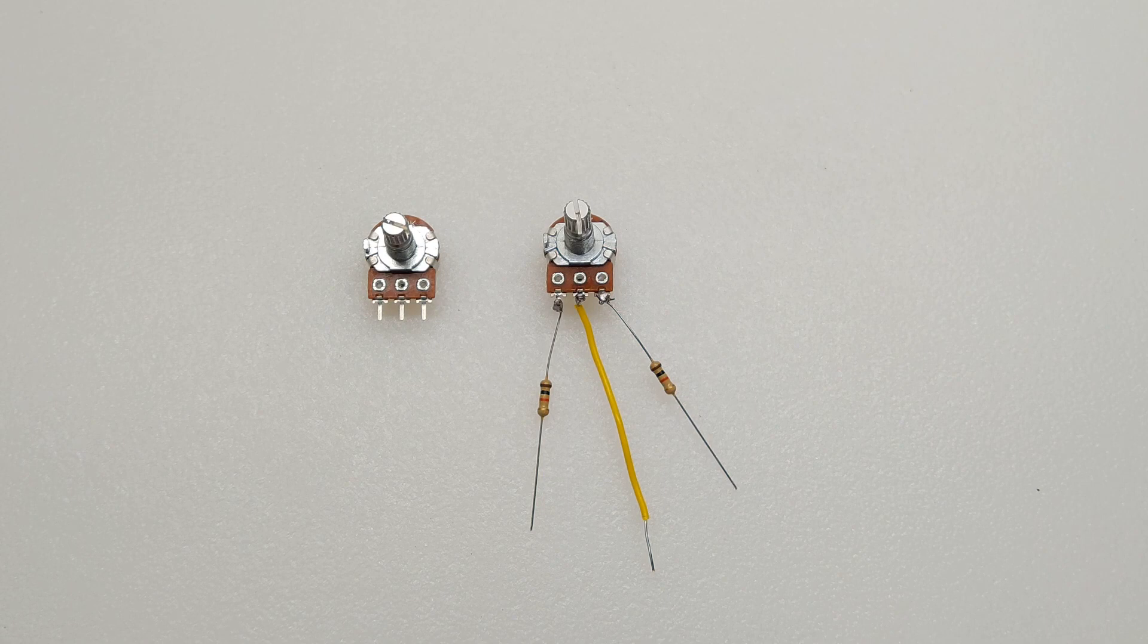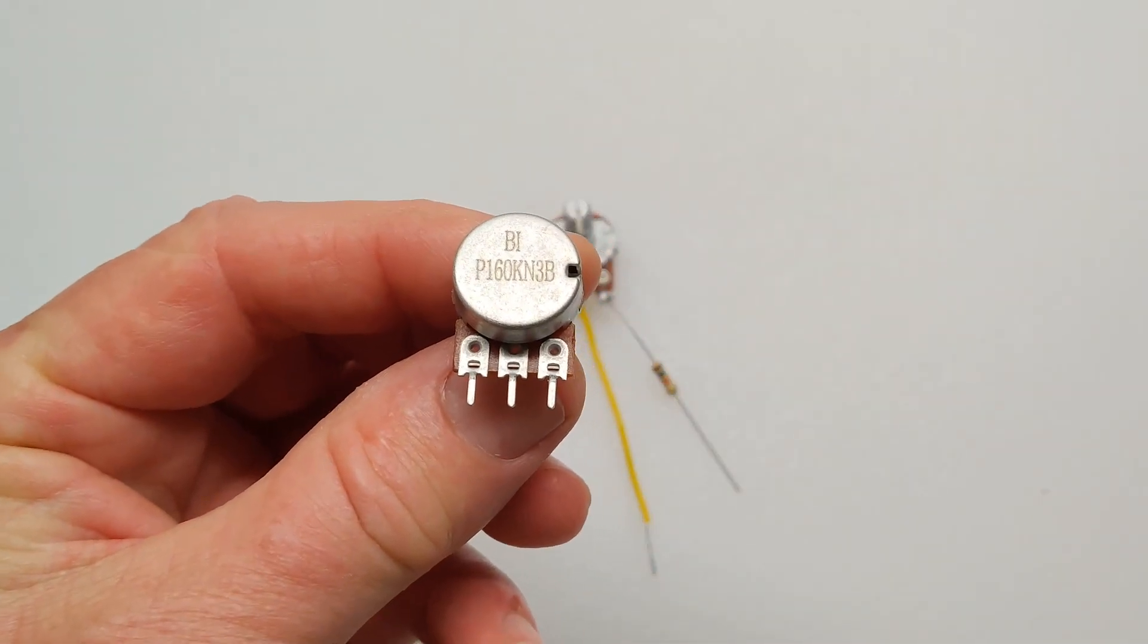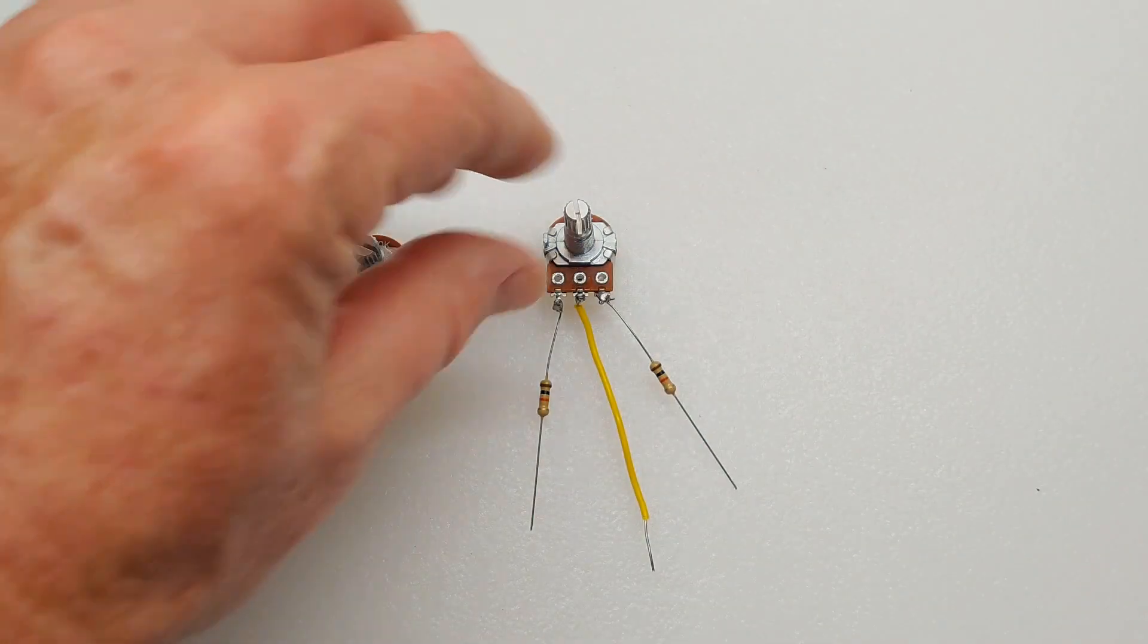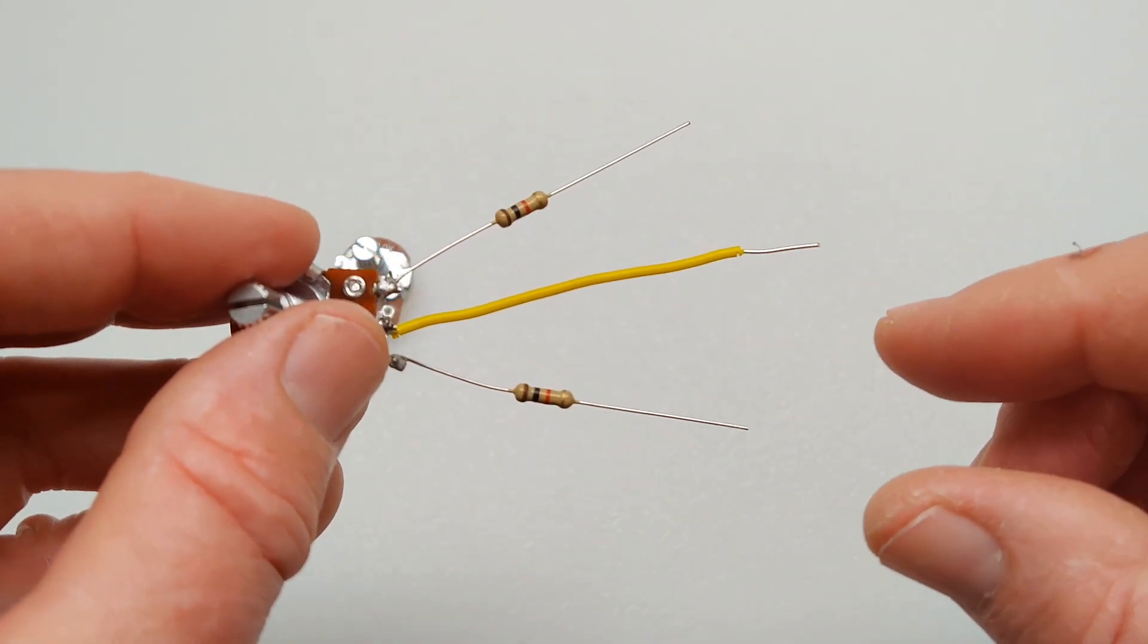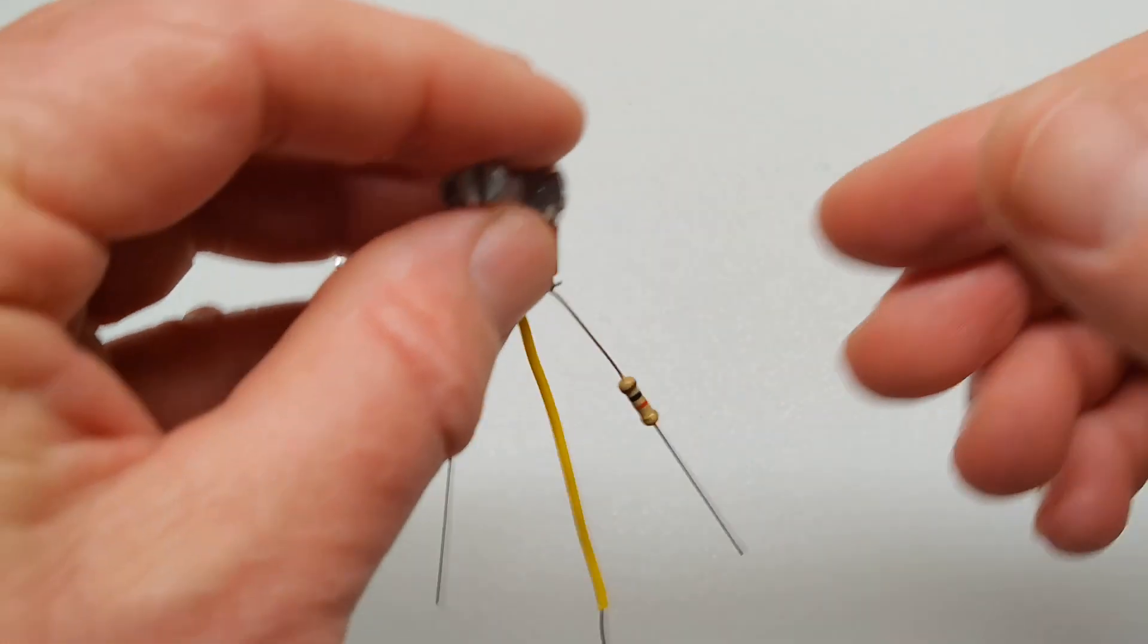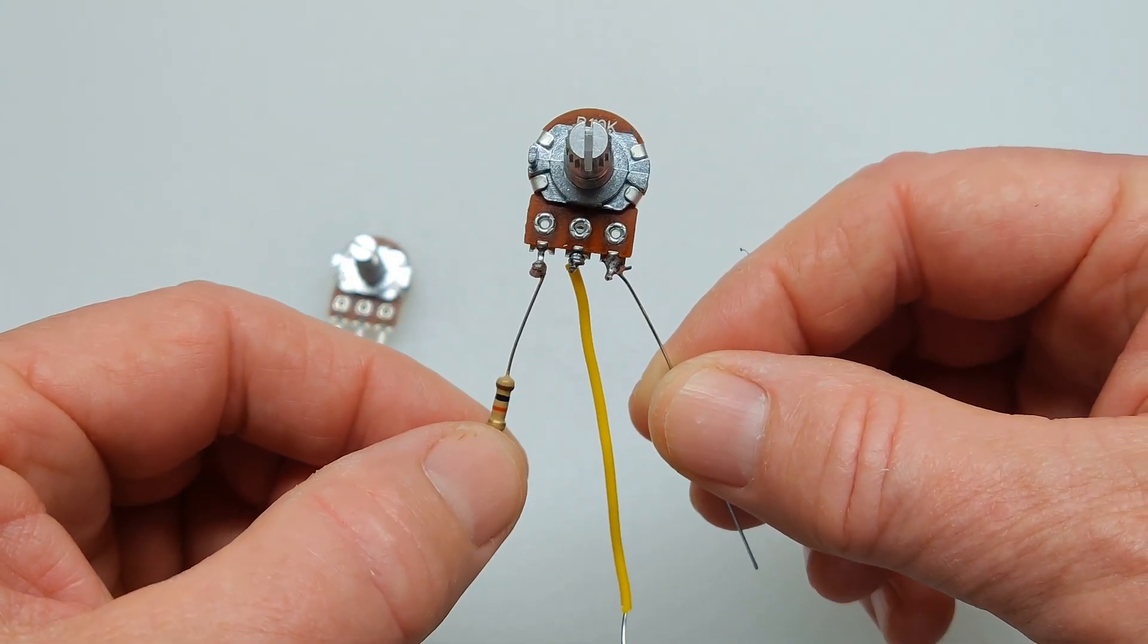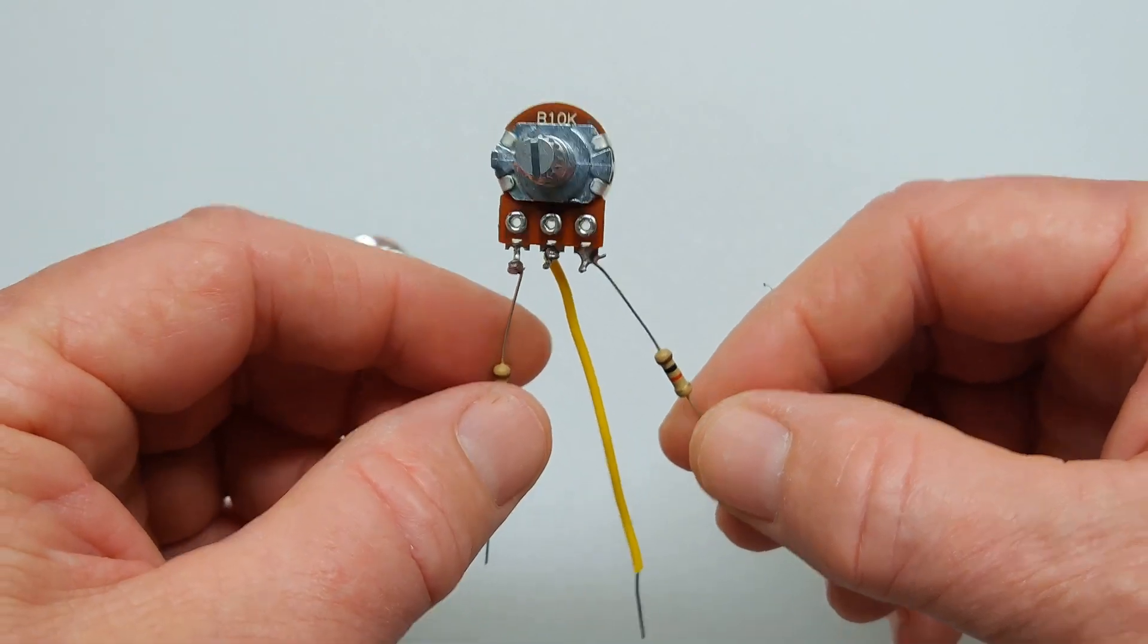These are two versions of the 10k pot that you can use in this project. This one can be used with an ESC by just extending the wiring from the pot on the servo board. And this one is to be used with a Haswing Pro2R 1.0 trolling motor. And the difference is that there is a 1k resistor on both the positive and negative terminals of this pot.